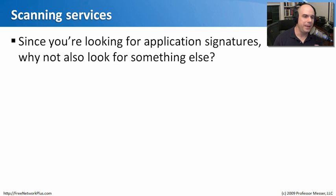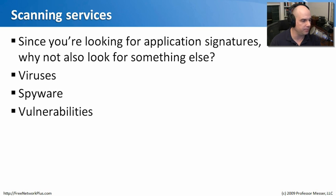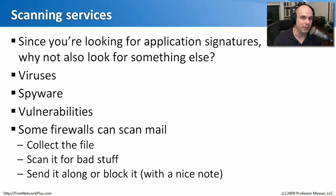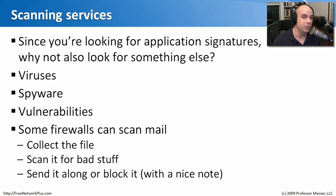Since we're looking at traffic, there are many things we can examine, and the signatures and scanning in firewalls become really useful. Firewalls can look for viruses, spyware, and vulnerabilities, and identify spam in every email that comes through. If they find a virus, they can block it and send you a message saying: Bob sent you an email but it had a virus, so I removed it and here's what's left. That's an important protection, especially in very large environments.